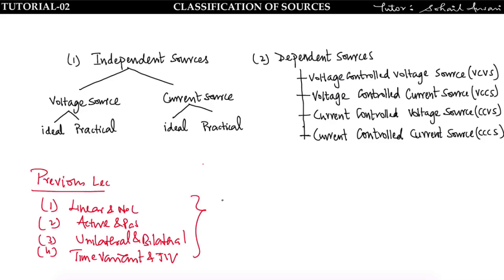Sources are classified in two categories: first is independent sources, and second is dependent sources. In independent sources, it is further classified into two types — voltage source and current source. Voltage source is again classified into ideal and practical, and similarly the current source is classified into ideal current source and practical current source.